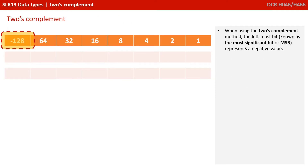Let's take a look at how this actually works. Here's our standard binary weighting line, starting with a 1 on the right-hand side and then doubling as we move left: 2, 4, 8, 16, etc. You'll notice that when using the 2's complement method, the most significant bit — the MSB, the left-most bit — now represents a negative value. So instead of the left column representing 128, it now represents minus 128.